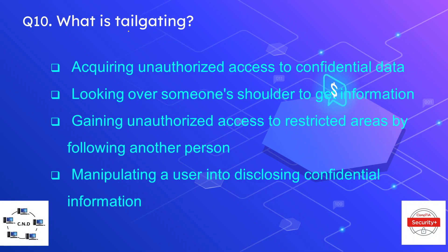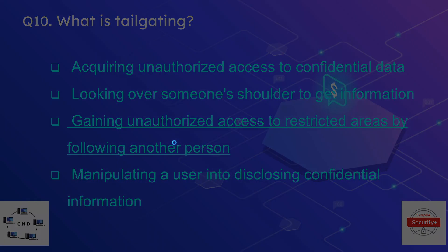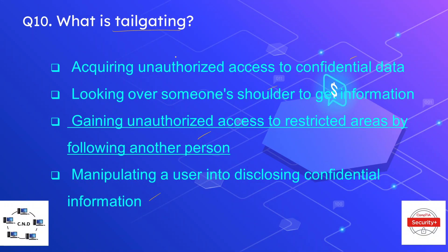Question number ten: what is tailgating? The options are acquiring unauthorized access to confidential data, looking over someone's shoulder to get information, gaining unauthorized access to a restricted area by following another person, or manipulating a user into disclosing confidential information. The correct answer is gaining unauthorized access to a restricted area or building by following an authorized person.